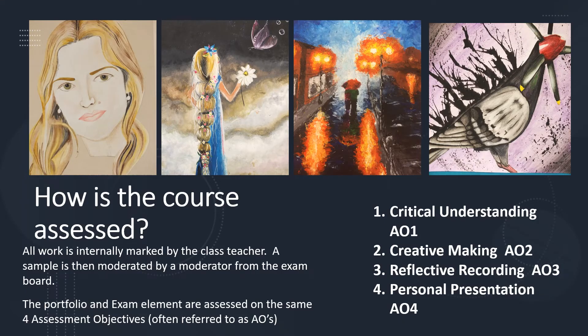So, how is GCSE Art and Design assessed? All work is internally marked by your class teacher, and then a sample is moderated by a moderator from the exam board. All of the work for the portfolio and the exam are assessed on the same elements, called assessment objectives: one, critical understanding; two, creative making; three, reflective recording; and four, personal presentation.